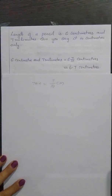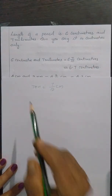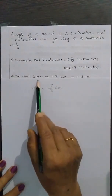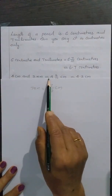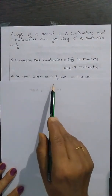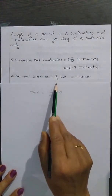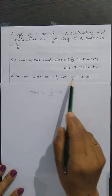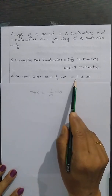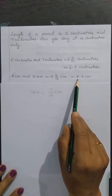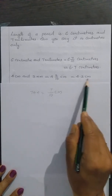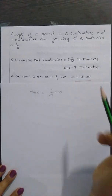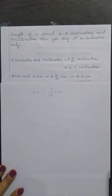Like this, 4 cm and 3 mm is equal to 4 and 3/10 cm, which is equal to 4.3 cm.